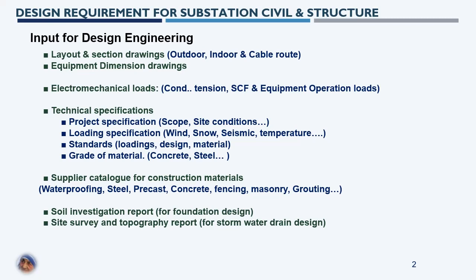The indoor layout and section for an AIS control room building also gives you access routes and door and window requirements based on the technical specification and project requirement. For a GIS — gas insulated switchgear — hall, the indoor layout provides details about gantry movement, gantry structure requirements, and gantry crane requirements.